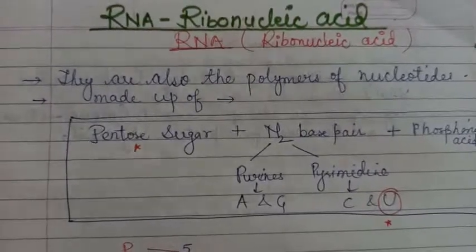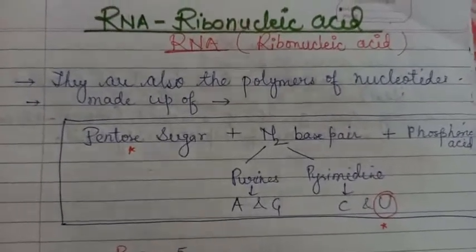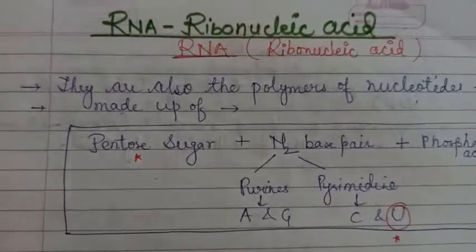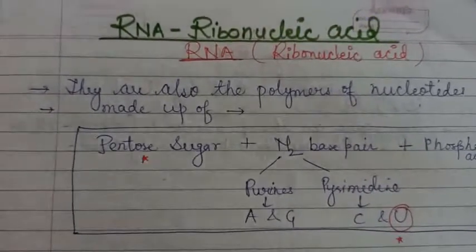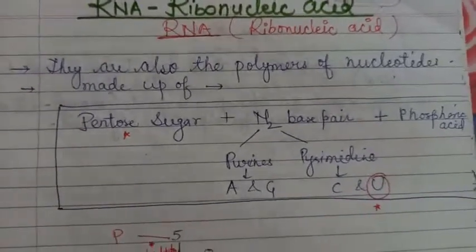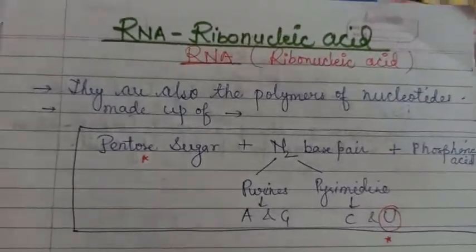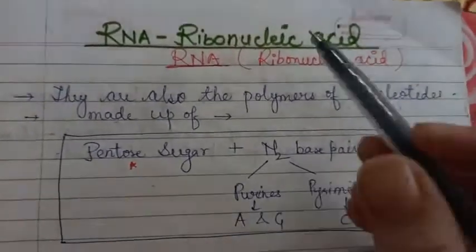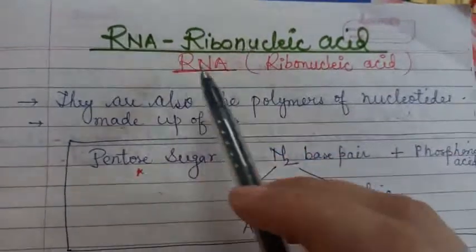Now as we have already discussed in detail about DNA, the next topic is RNA. The full form of RNA is ribonucleic acid. As I already told when I was teaching you DNA, it is called ribonucleic acid because it has ribosugar.